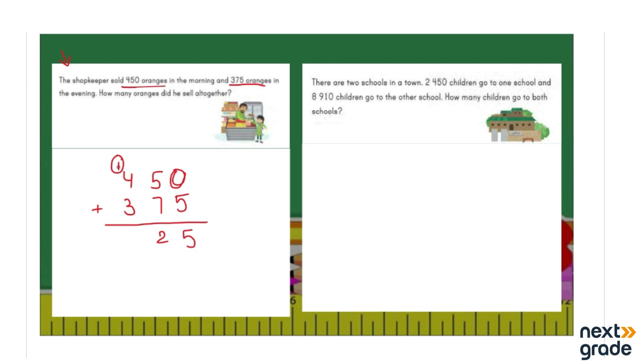Let's erase the lines that we have drawn for counting and move on. Now we have 4 over here and 4 plus 1 is 5. And then we have to add 3 more numbers: 4 plus 1 is 5 and then 6, 7, 8. So we are going to write 8 over here. How many oranges did he sell all together? 825 oranges. All right, now let's move on to the next example.